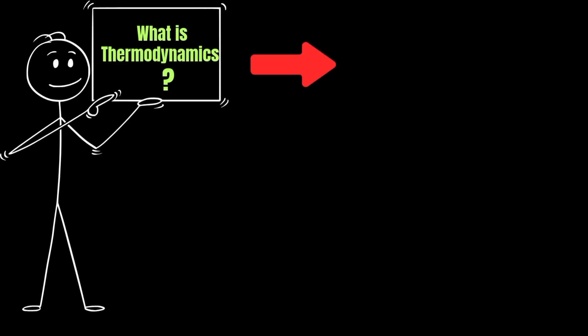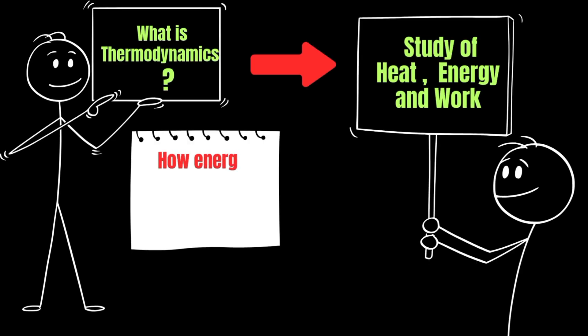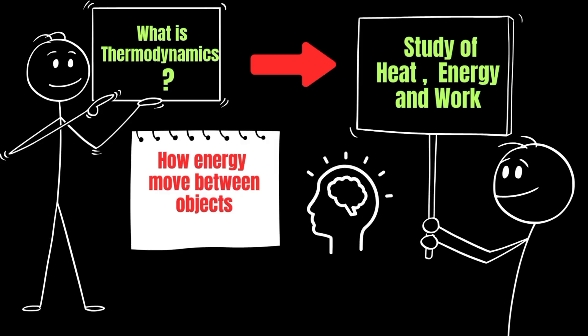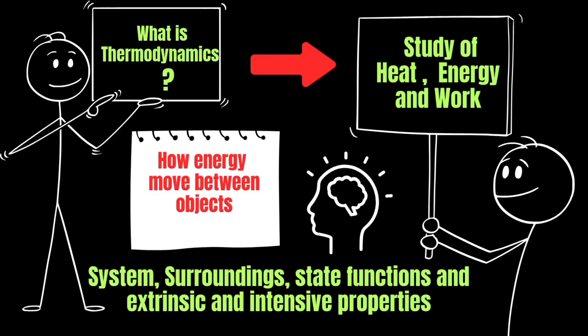Thermodynamics is the study of energy, heat, and work. It explains how energy moves between objects and how it changes from one form to another. To understand thermodynamics properly, we first need to learn some important basic terms such as system, surroundings, state functions, and the difference between extensive and intensive properties.